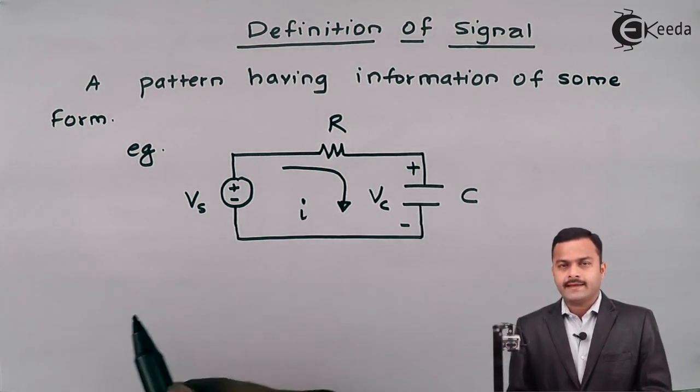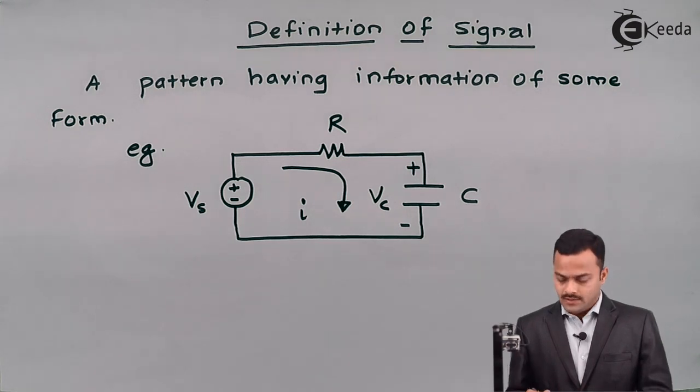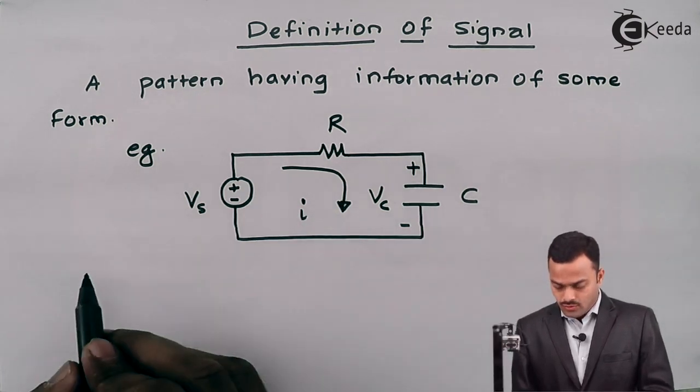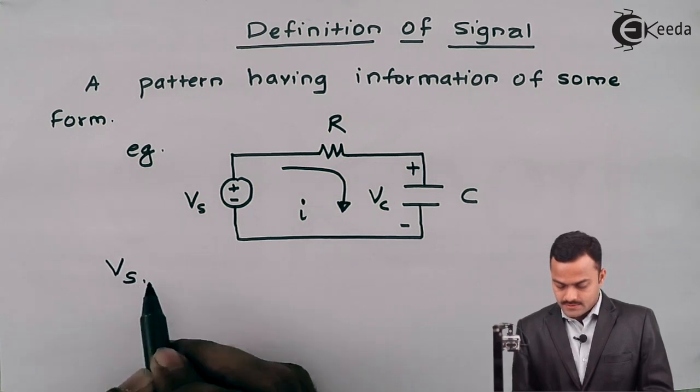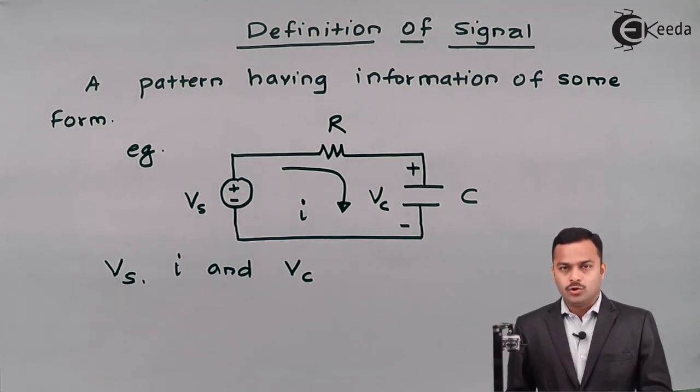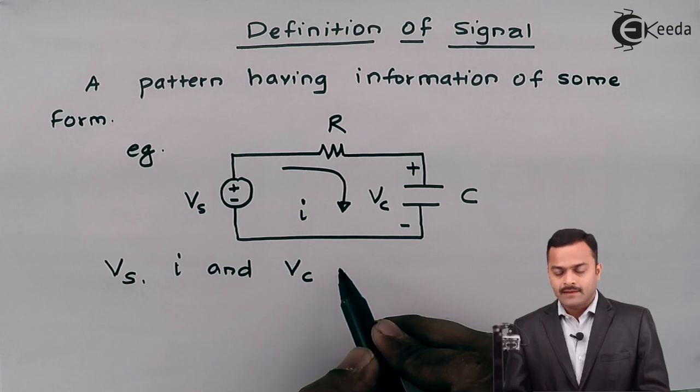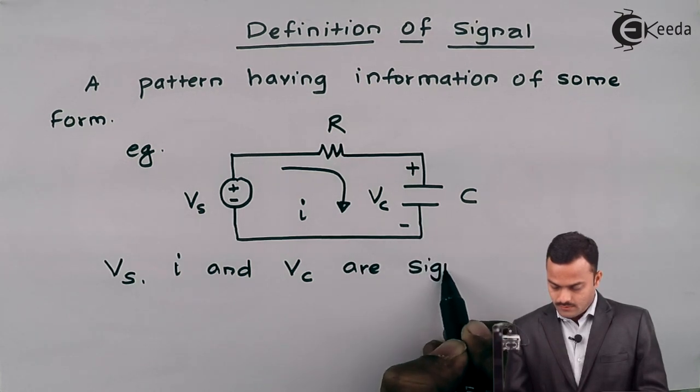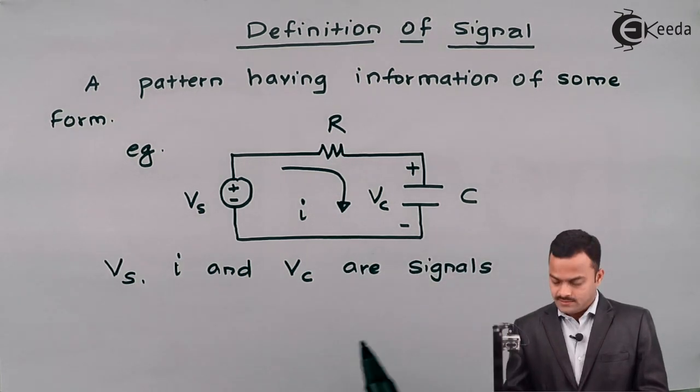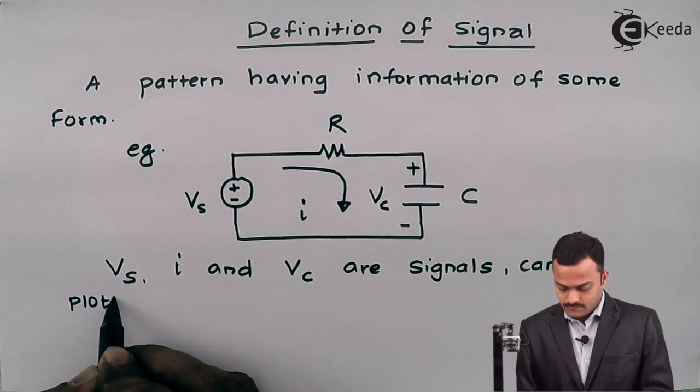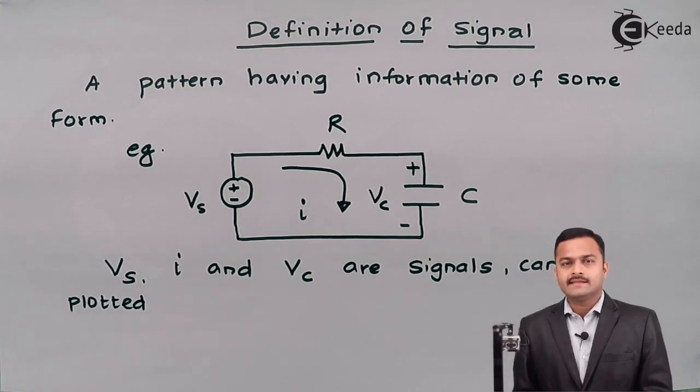Now in this case I can have a pattern or a graph for supply voltage, supply current and capacitor voltages. So in this case Vs, I and VC can be shown or can be represented against the time T. So I can say Vs, I and VC are signals that can be plotted against time T.